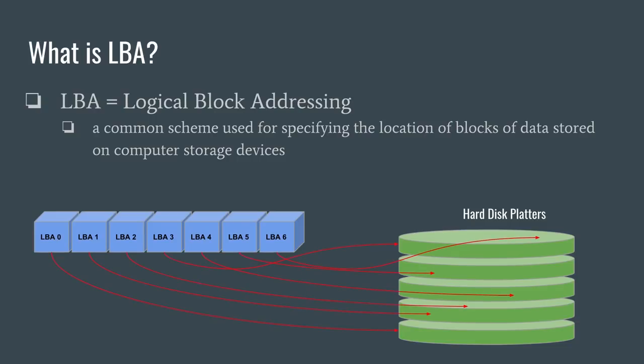The storage device automatically maps these LBA numbers to physical sectors on the hard drive or SSD. Keep in mind that even though LBA numbers may seem sequential, they do not necessarily map to contiguous physical sectors. One example of this is when your hard drive has developed a bad sector. When this happens, the hard drive will attempt to reallocate the bad sector to a spare sector. In this case, the LBA number doesn't change, but the hard drive automatically maps the LBA to a new physical sector.